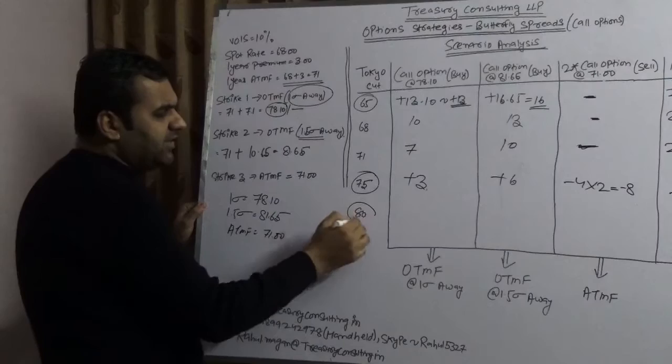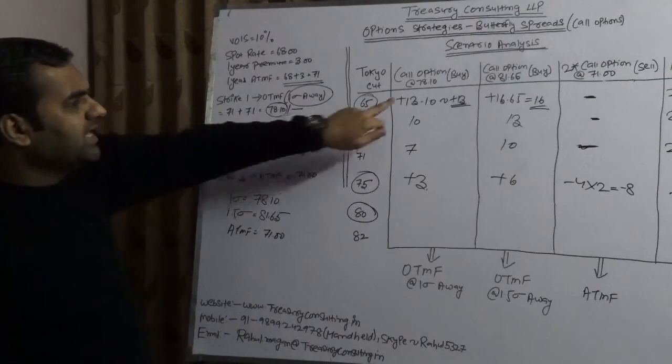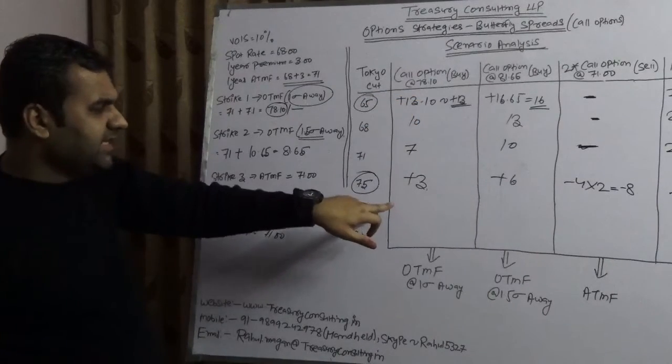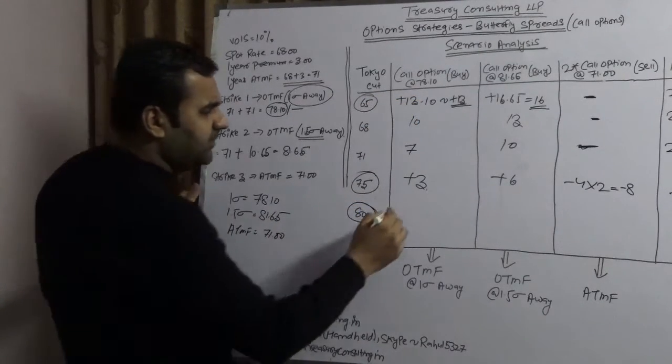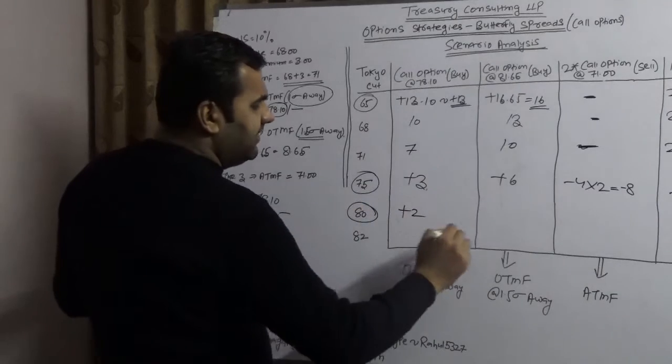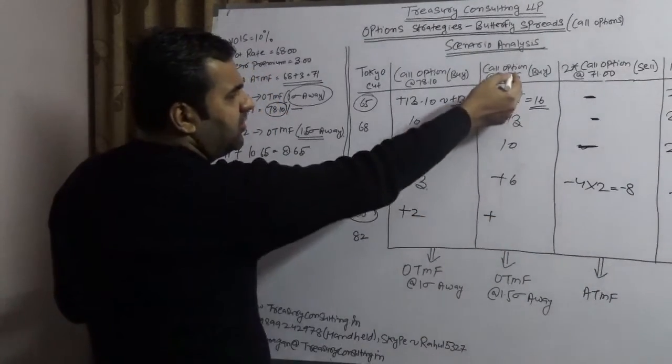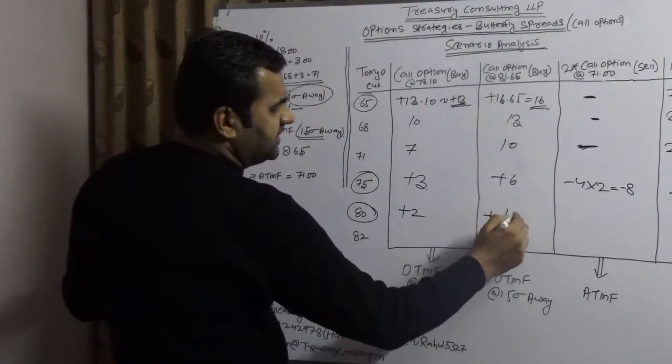Here in case of 80, you will exercise your right at 78.10 because market is at 80. You would have a gain of plus 2. Here you would have a gain of plus... Here you won't exercise but still you have a gain of 1.65.